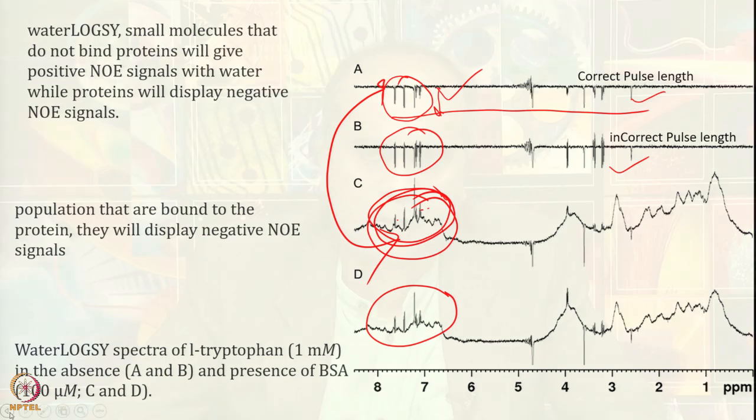So here I will end with WaterLOGSY. These 3 to 4 techniques I discussed where we observe the ligand: line width detection and the effect of T2, STD NMR and variations including STDD, then transfer NOE, and finally WaterLOGSY. These are the 4 commonly used techniques when we observe the ligand. In the next class I am going to discuss the protein-detected experiments, which can be used for understanding protein-ligand and protein-protein interactions.